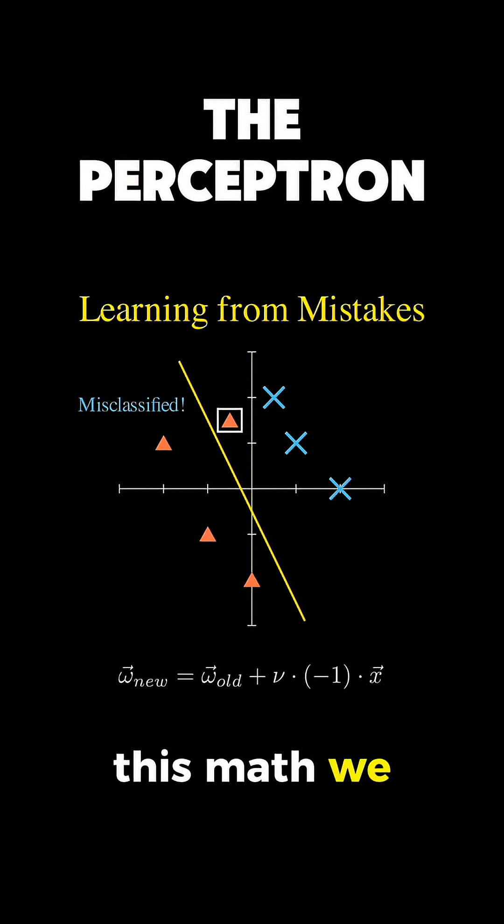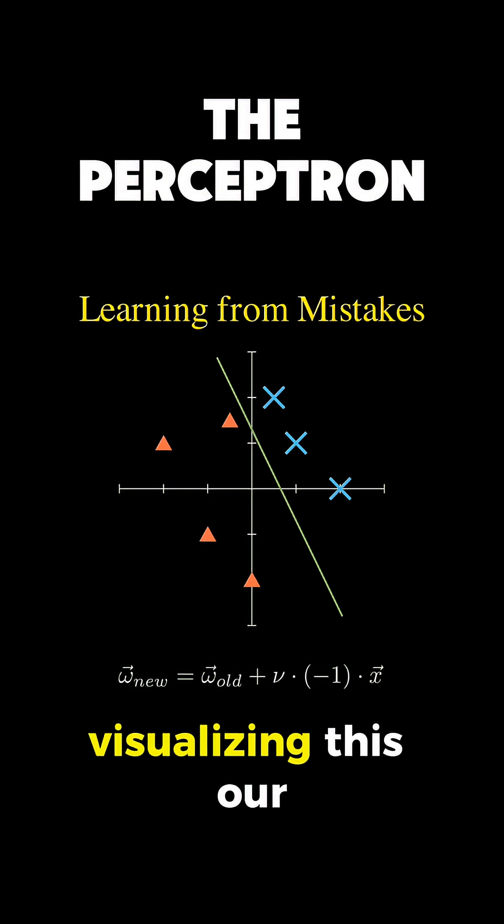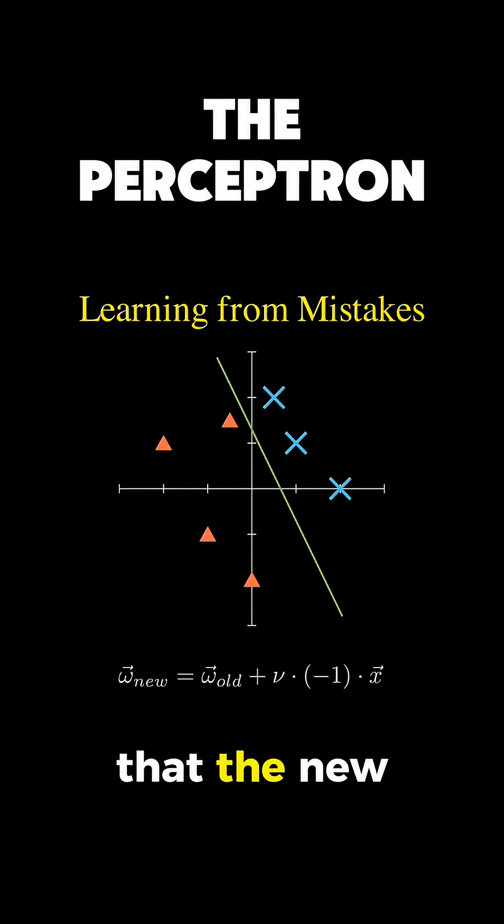When we apply this math, we get a new weight vector. Visualizing this, our separating line shifts. And look at that, the new line now correctly places the wayward triangle on the correct side, while keeping the others correct. We've successfully learned from our mistake.